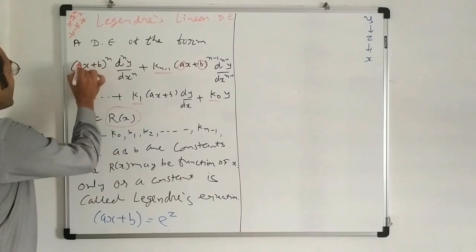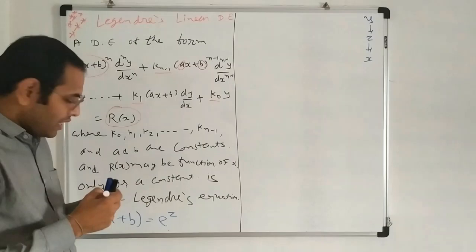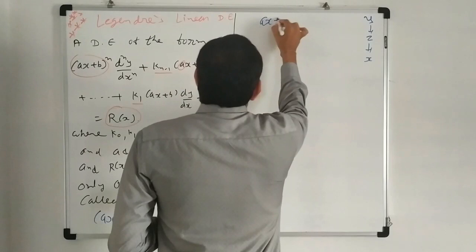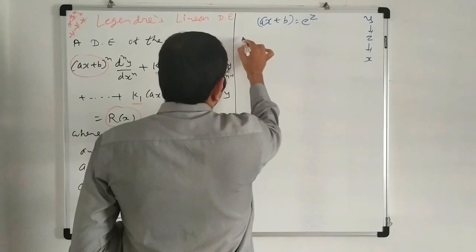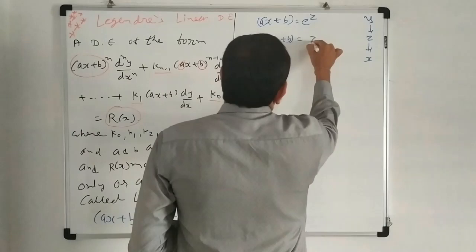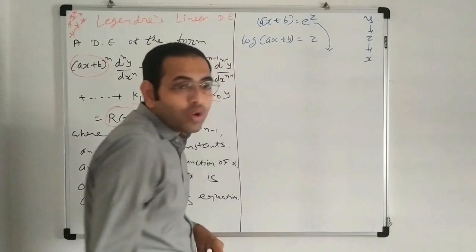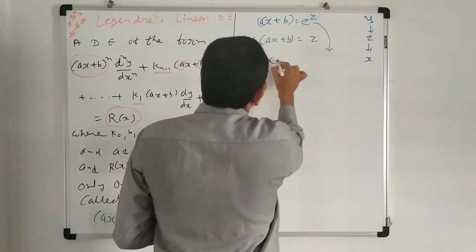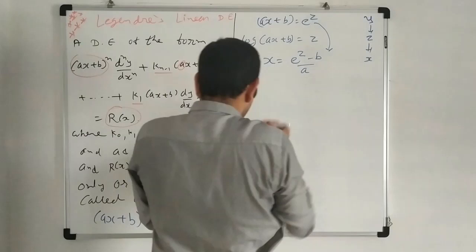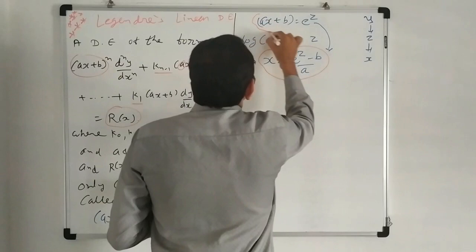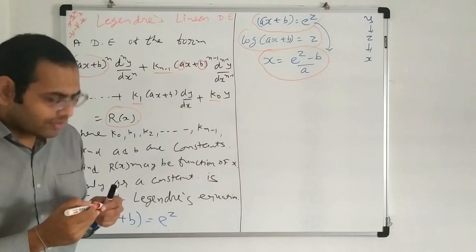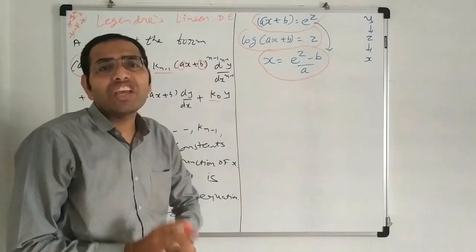In this method, we assume AX + B equal to e^Z, then taking logarithm on both sides. First of all, assume AX + B = e^Z, and taking logarithm both sides we get log(AX + B) = Z. We require this equation, and to make X the subject, we get X = (e^Z − B) / A. We require these equations in each and every example.